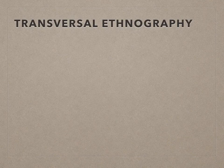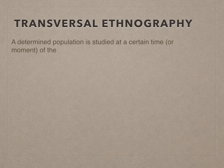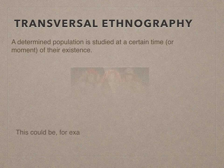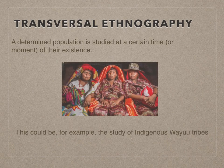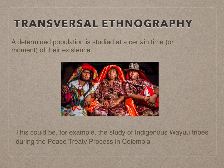A transversal ethnography seeks to study a determined population but only at a certain time or moment of their existence. A great example for this could be the indigenous Wayuu tribes during the peace treaty in Colombia in the years 2016 and 2017.